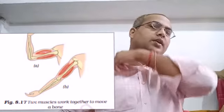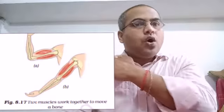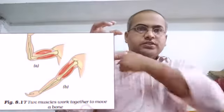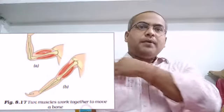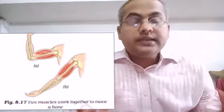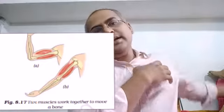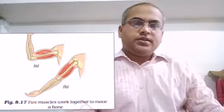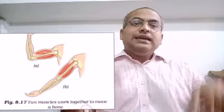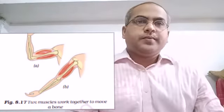Next is the ball and socket joint. Here, the collar bone and a triangular bone from the back form a cavity — a hollow space — and the upper arm bone fits into this hollow space. It can move in multiple directions, like a cricket bowler's bowling action. Similarly, where the thigh bone joins with the hip, these are both examples of ball and socket joints.